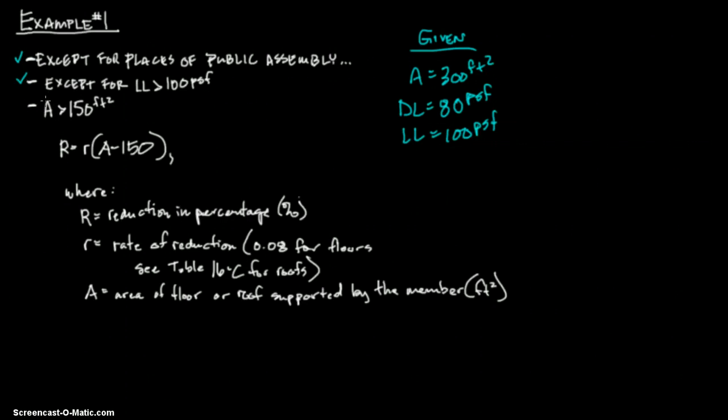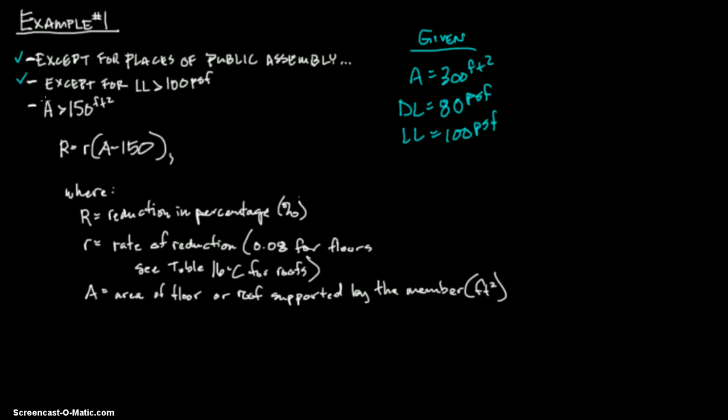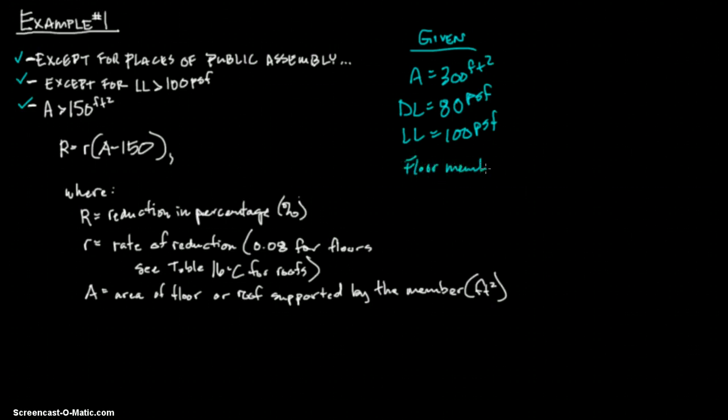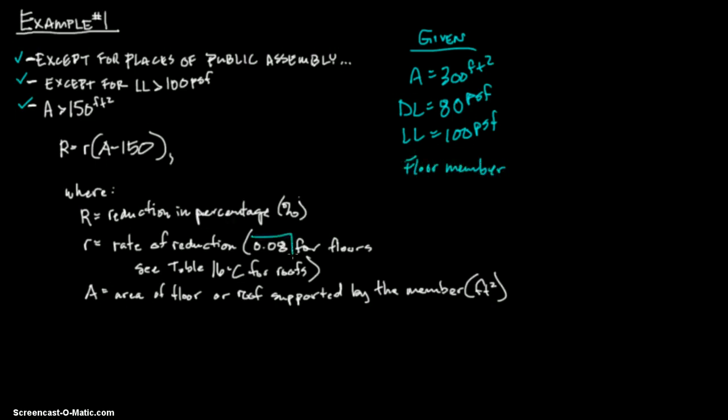So we can reduce the live load according to that criteria. If we go down, it says the building code permits live loads on any member supporting more than 150 square feet to be reduced. Is it more than 150 square feet? Yes, it's 300 square feet, so it can be reduced. We use this equation right here. R is the reduction in percentage. Little r is the rate of reduction, 0.08 for floors. This is a floor member.